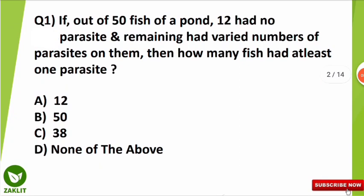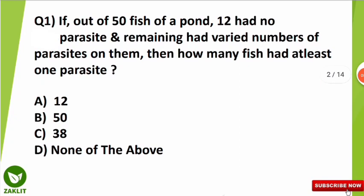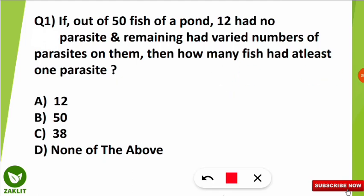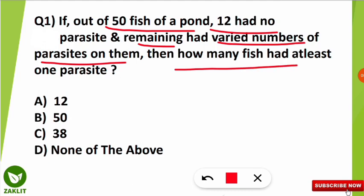Today we are going to discuss some important and expected questions from biostatistics, and we will deal with numericals. You should be ready with pen and paper so that you can write down all the concepts. The first question: if out of 50 fish in a pond, 12 had no parasite and the remaining had varied numbers of parasites on them, then how many fish had at least one parasite? These questions are taken from the previous UGC NET environmental science paper, so kindly note down the question along with the solution.